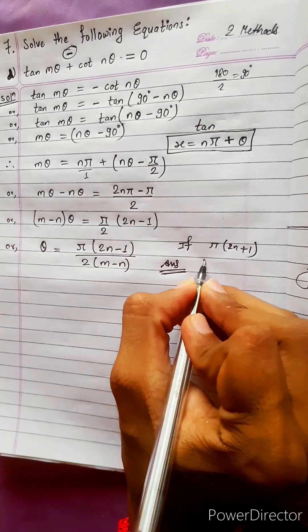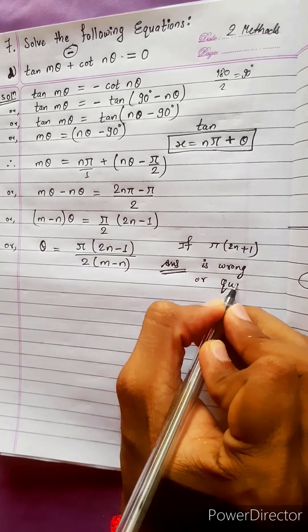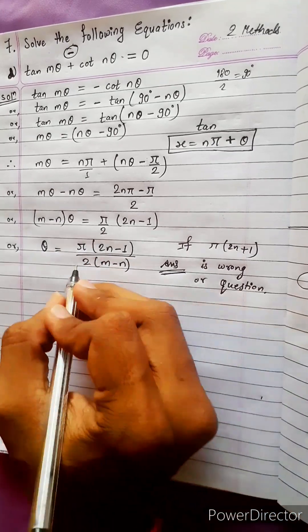If answer is wrong or question is wrong, out of 2 anything is wrong, but this is correct answer. This is 100% correct.